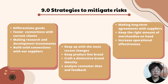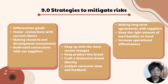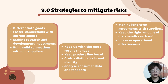In order to mitigate the risks, we have several strategies. For the first risk: differentiate the goods, foster connections with current clients, make research and development investments, and build solid connections with our suppliers. For the second risk: keep up with the most recent changes, keep the product line broad, create a distinctive brand identity, and analyze consumer data and feedback. For the third risk: make long-term agreements with suppliers, keep the right amount of merchandise on hand, and increase the operational effectiveness of our company. That's all from me — I'll pass it to the next presenter.